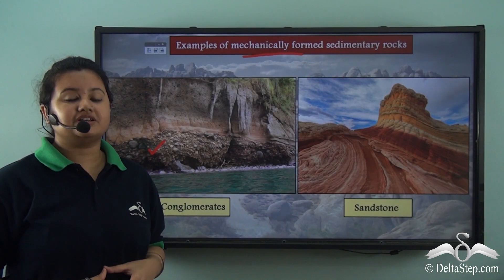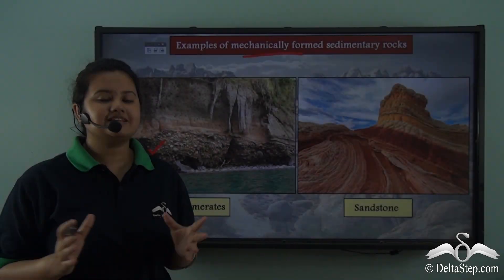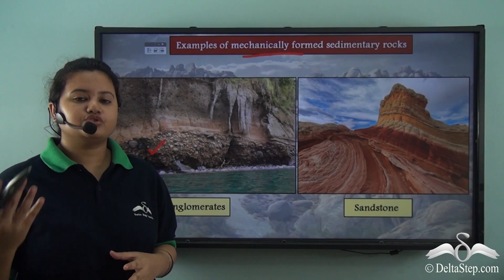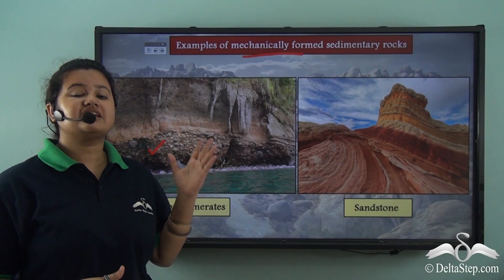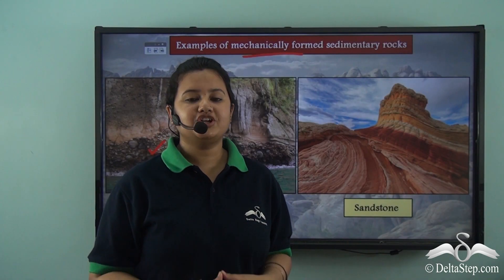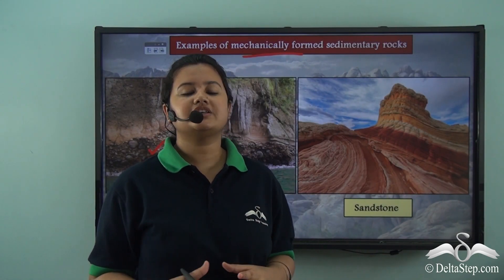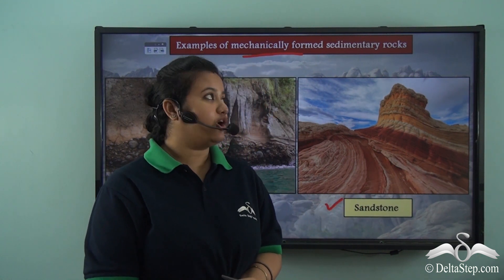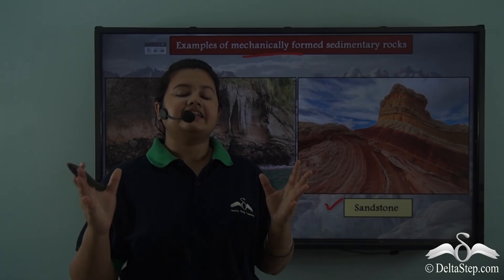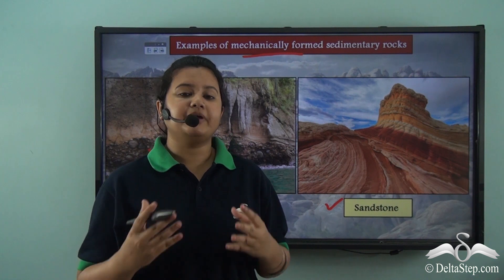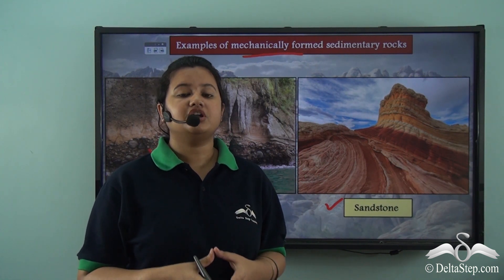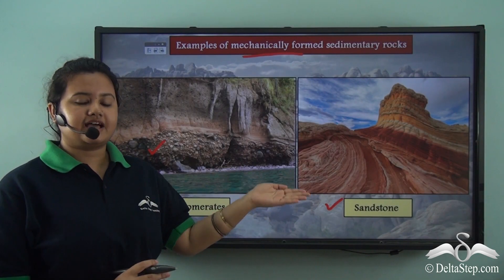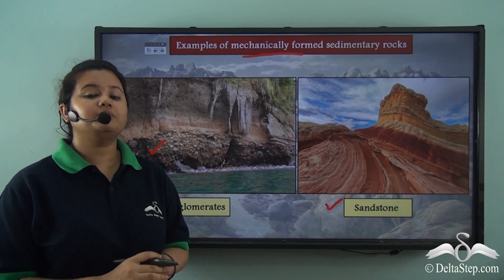Why do these materials have rounded structures? This is because these rocks are eroded and carried by the river, and due to friction, they acquire a rounded shape. Red Fort is composed of red sandstone, and sandstone is another example of mechanically formed sedimentary rocks. Sandstone has finer particles because it is formed due to continuous erosion by natural agents like rivers or wind. Thus, conglomerates and sandstone are examples of mechanically formed sedimentary rocks.